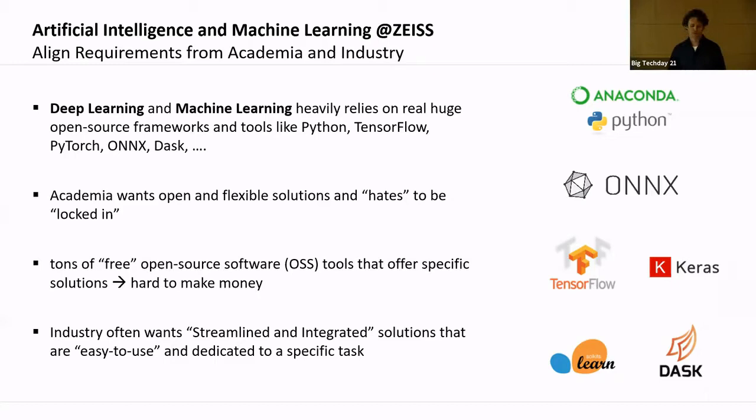In academia, there are many free open source tools that have reached a high level of maturity — some with the same performance as commercial tools, but for free. As a company, you have to make money at some point, so this is something we have to consider. Industry is a little different: they want streamlined solutions, ideally one button. If it works and saves time and money, they're fine. What algorithm is used doesn't matter as long as it works.